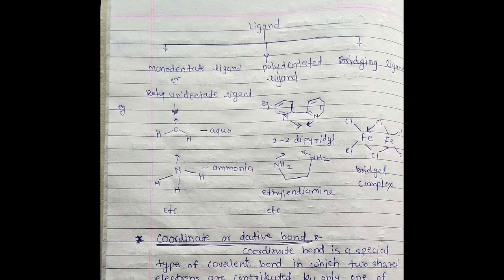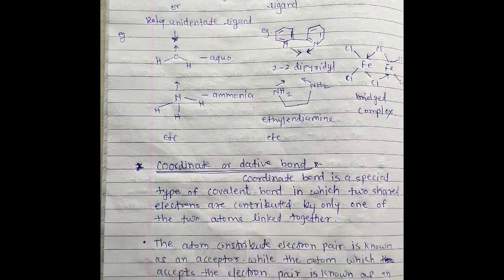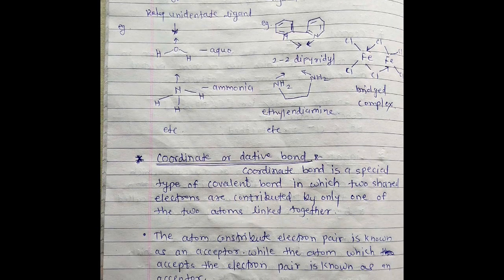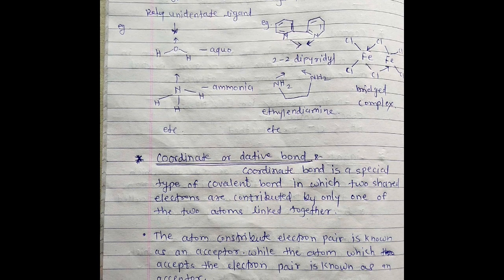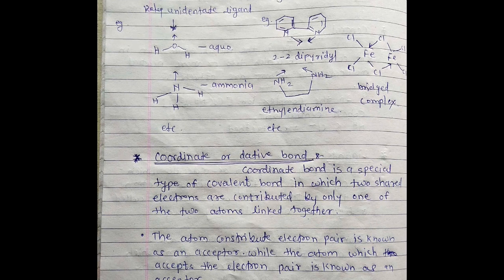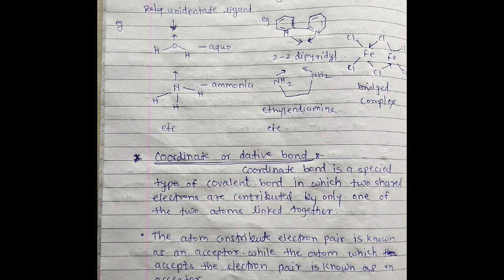Next term involved in coordination chemistry: coordinate or dative bond. It is the most important bond between coordination complex. Coordinate bond is a special type of covalent bond in which two shared electrons are contributed by only one of the two atoms linked together.